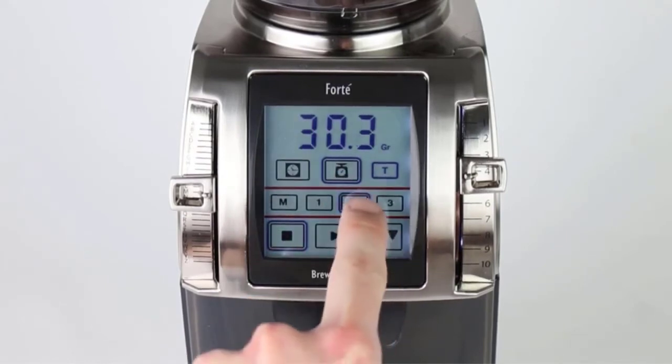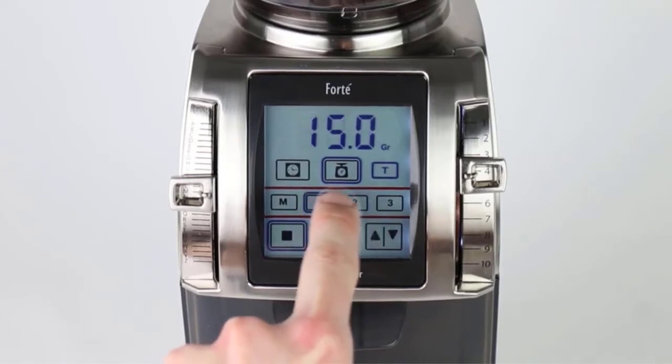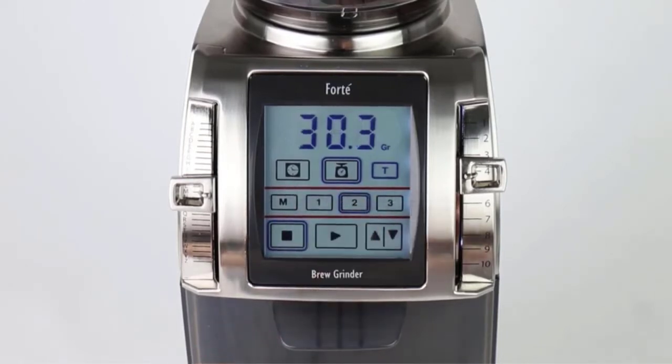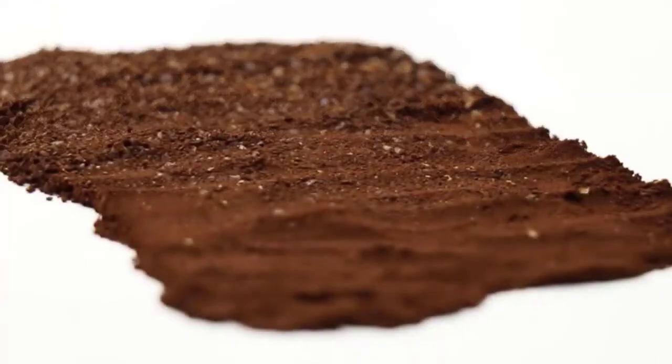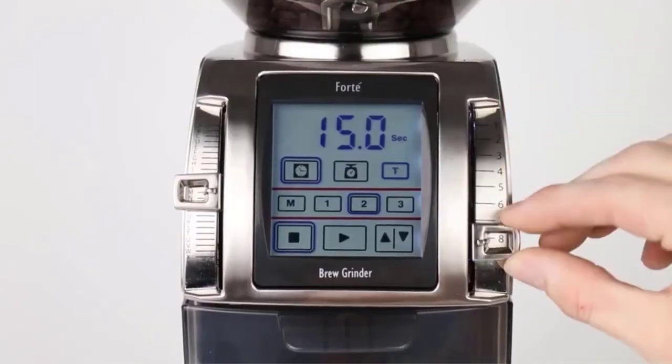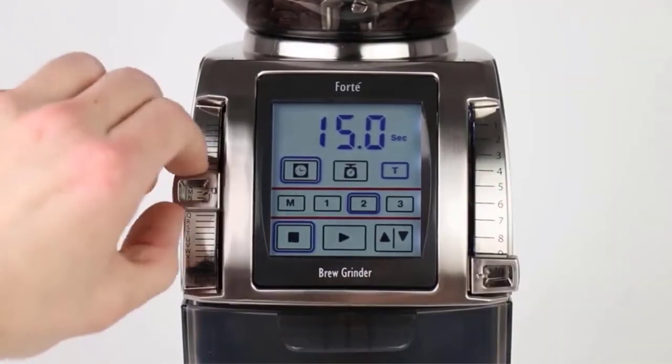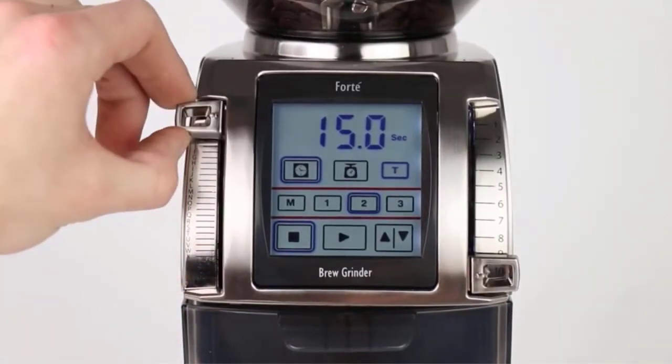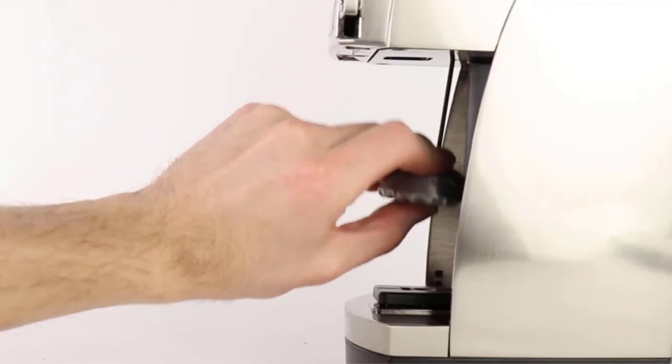Don't be fooled by its size, it packs plenty of power and more than enough intuitive features. The Forte BG model sports 54mm flat stainless steel burrs made to provide accuracy and precision in producing coffee grinds. This machine is great for all brewing styles as it includes an impressive total of 260 different grind settings.